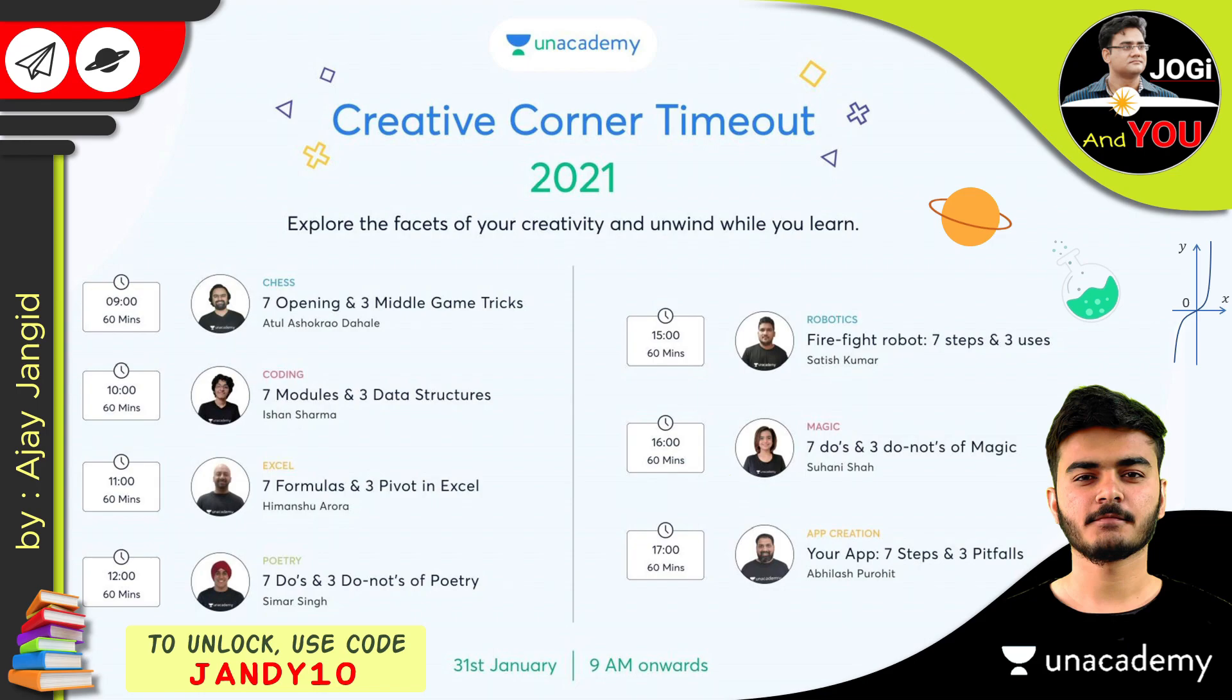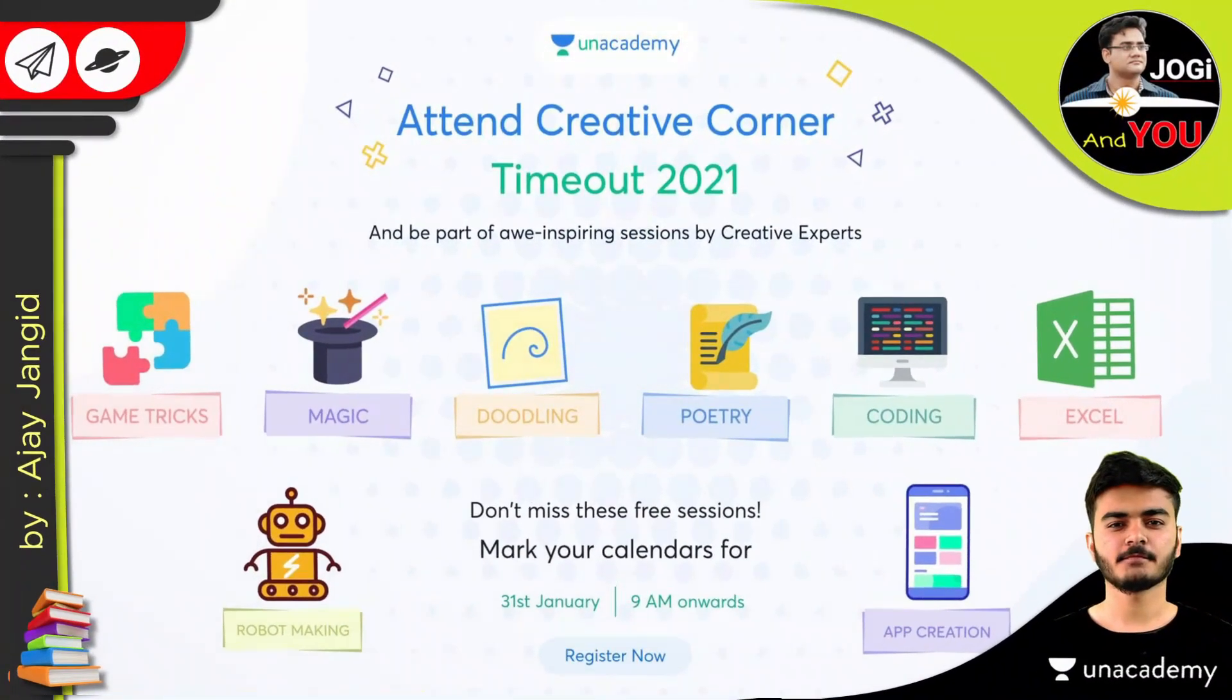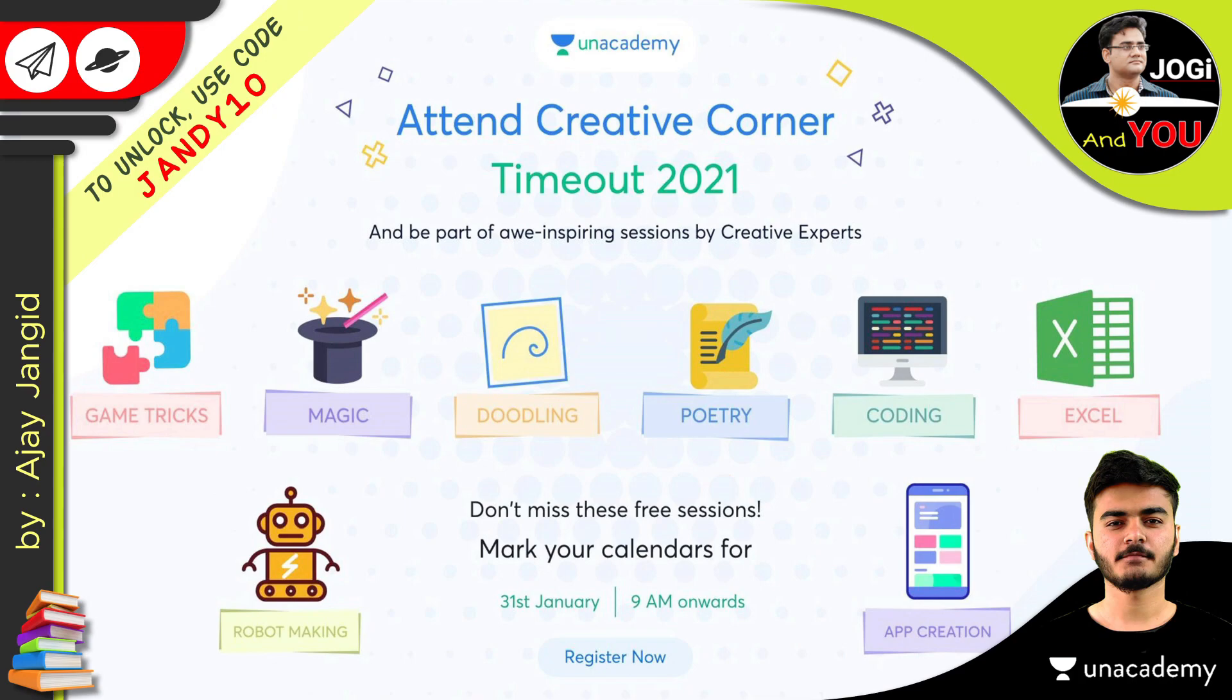Every scientist, engineer, doctor, magician, and artist was once a learner just like you. So give wings to your imagination and learn without limits. Put on your creative hats and get ready for Unacademy's timeout 2021. The most exciting part is you can win a subscription for Creative Corners by submitting a video of yourself recreating something that you learned in our timeout sessions. The date is 31st January and the time is 9 am onwards. All the links are given in the description. Go and register yourself.